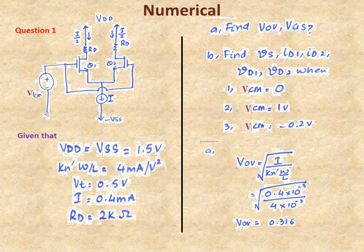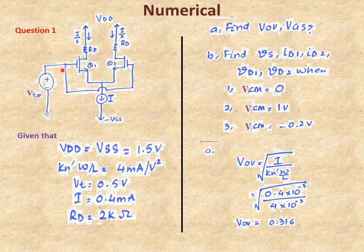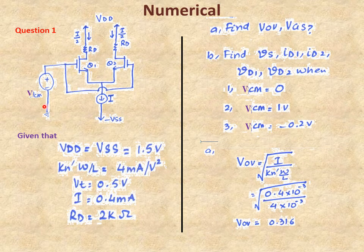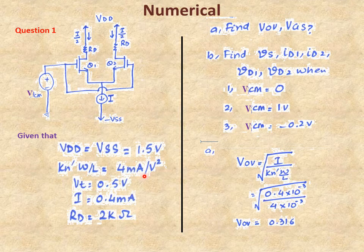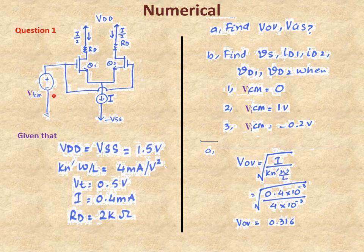Let us begin with part A where we have to find VOV. We already derived this equation for VOV in the last class. The formula: I is 0.4 milliampere, KNW/L is 4 milliampere per volt squared. VOV (overdrive voltage) is to be found using the formula derived previously.